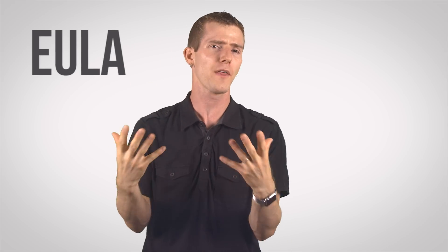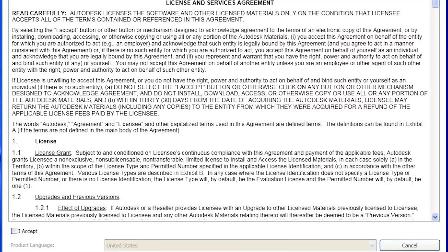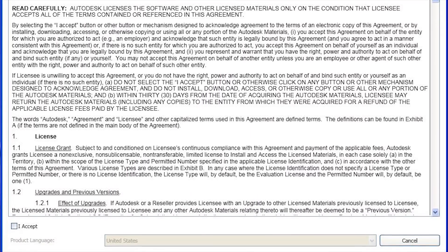We've all clicked agree to these things without reading all 50 pages or even sometimes a single sentence. So why the heck are they included when we all know that hardly anyone reads them? What is the point?